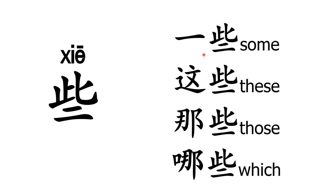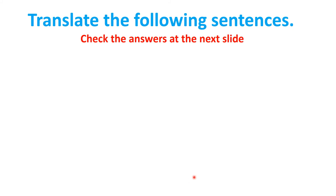些 is another measure word, used for things. 一些 means 'some', 这些 means 'these' and is used for plural. 哪些东西 means 'which things?' — 哪些 is used for plural.